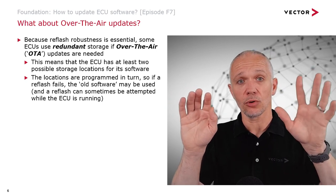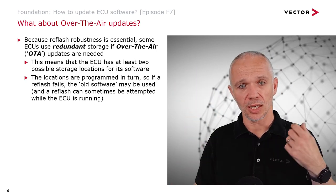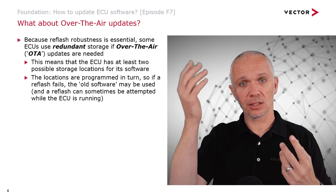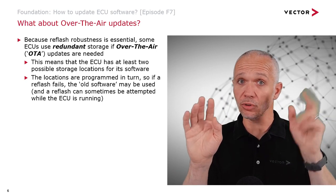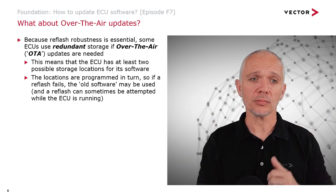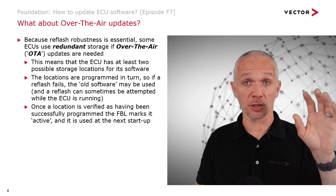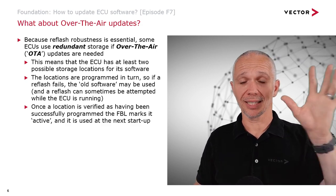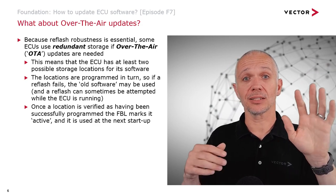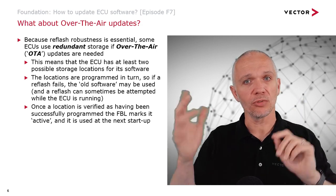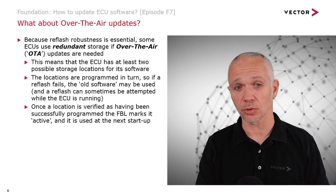We program the locations in turn. If we have location one and location two and we're running on location one, we would try to program location two. If it fails, it doesn't matter because we're still running on location one. We can even have the ECU running while we're trying to program location two. Once we've verified that location two has been programmed correctly, we set it as active, and it will be used next time the ECU starts up. The next time we want to do reprogramming, we'd reprogram location one. All this is handled in the background, sometimes even by the microcontroller.